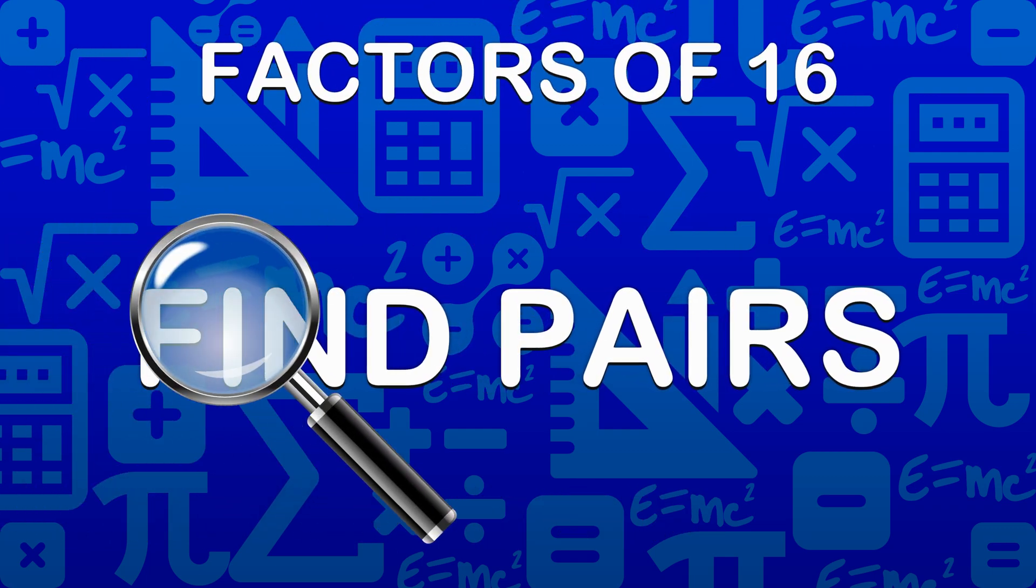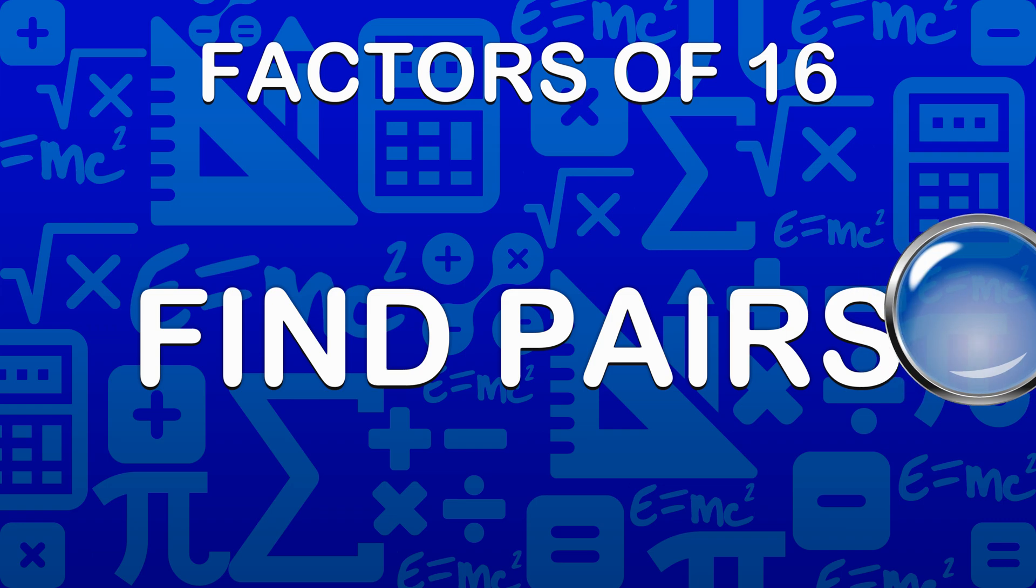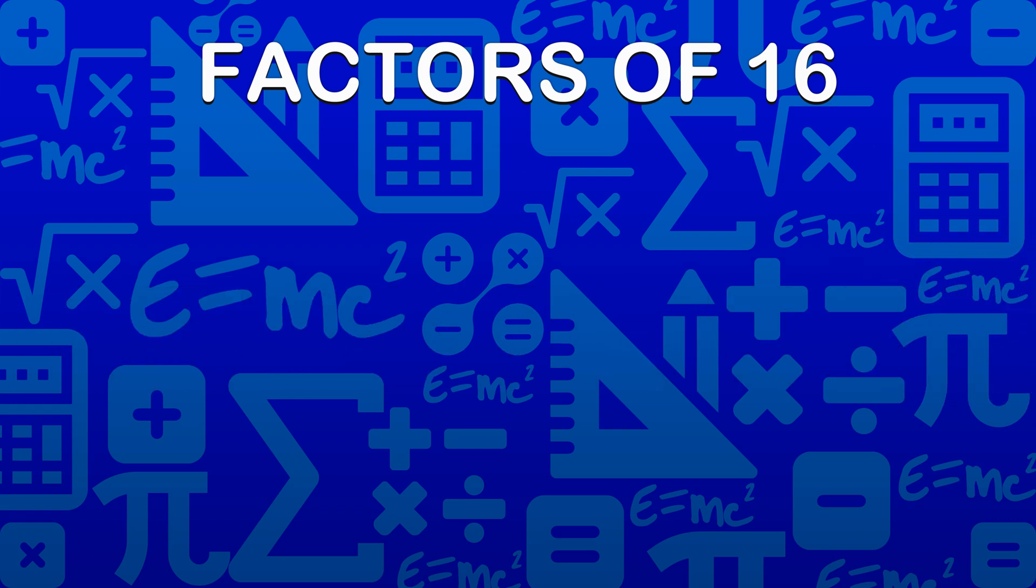First, we will find pairs of factors. Pairs are numbers that multiply to give the number. Here are the pairs of factors.